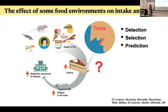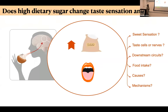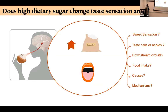Taste is obviously important for feeding behavior — not just for the pleasure we get from food or detection, but also to make predictions about what to eat, which are important for meal size. When I started my lab, I wanted to understand how high dietary sugar changes taste sensation and intake — does it actually change it, does it affect the taste cells or the sensory nerves, what are the effects on downstream circuits, what is the effect on food intake, and what are some of the causes and mechanisms?